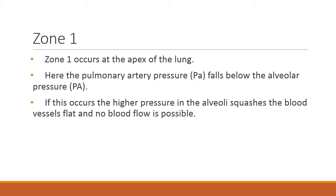Zone 1 occurs at the apex of the lung. Here, the alveolar pressure is higher than the pulmonary artery and the pulmonary venular pressure. Because of the high pressure in the alveolus, it squashes the blood vessels flat such that blood flow through the blood vessels is not possible.